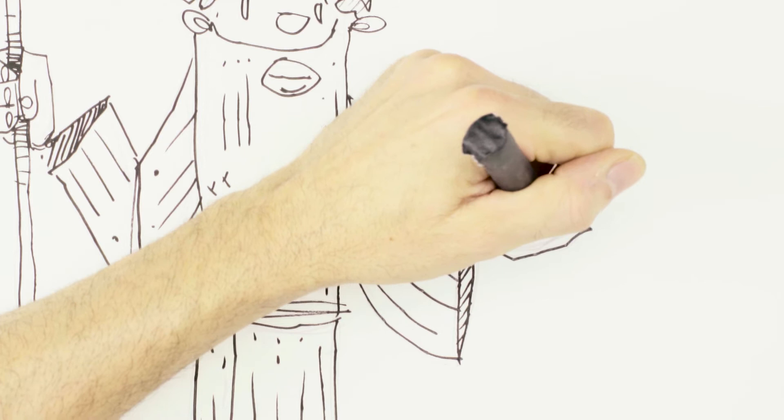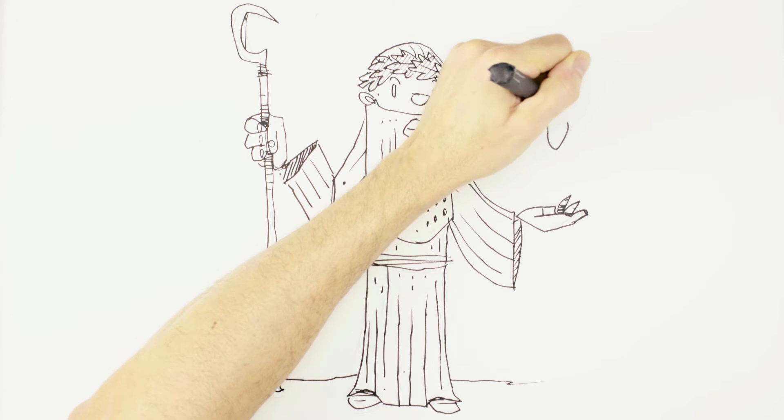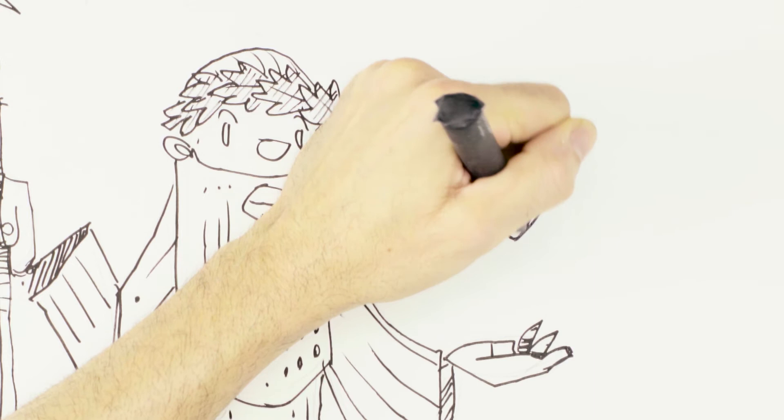We're not really sure what was going to be in this druid's hand. And because acorns were so important to the druids, I'm going to do a little magical acorn levitating above his hand, as only a druid could do.